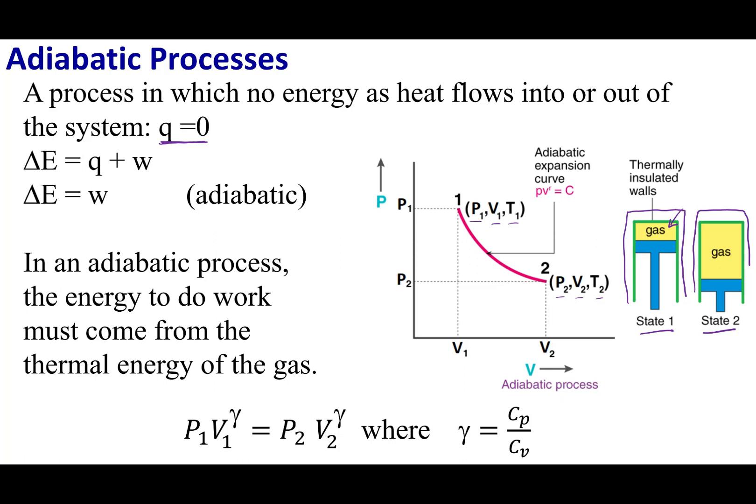Before we get into that, let's go ahead and talk about the consequence of having Q equal to zero. Well, I know my internal energy equals Q plus W, and if Q is zero, well then my internal energy is going to equal W my work. And so this is true for an adiabatic process. And the take-home message here is that in an adiabatic process, the work that my system is doing is coming from the thermal energy of my system.